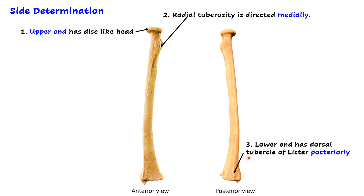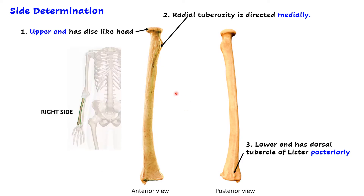Third, when we look at the lower end of the radius, anteriorly it is smooth but posteriorly we have grooves and a tubercle known as the dorsal tubercle of Lister. This should be directed posteriorly. Keeping this in mind, this bone belongs to the right side.